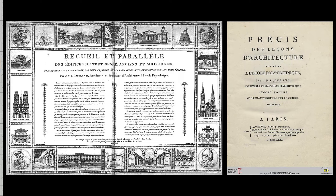Going back to 1800, Durand published a book called Collection and Parallel of Buildings of All Kind, Old and Modern — a kind of repertory in which appear all the most important buildings built before 1800. It was a kind of reservoir of knowledge, which was to be applied using his second book, published in 1809: the Précis des leçons d'architecture données à l'École Polytechnique.